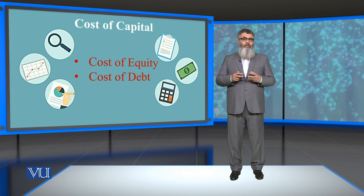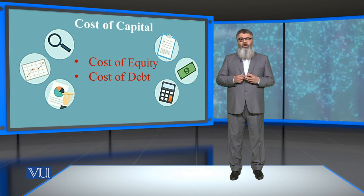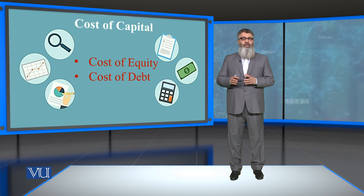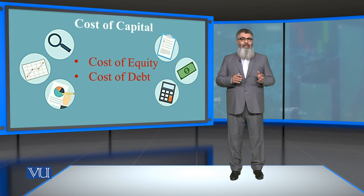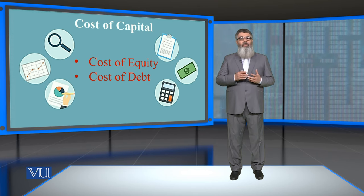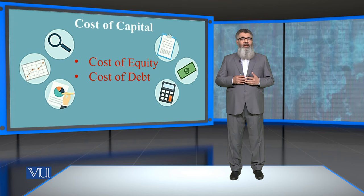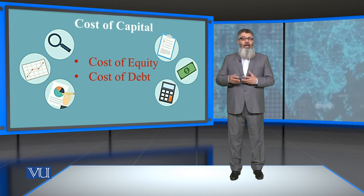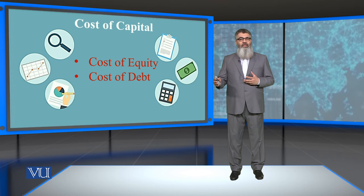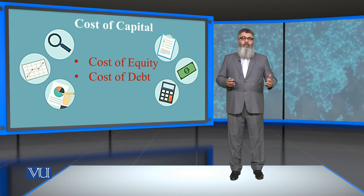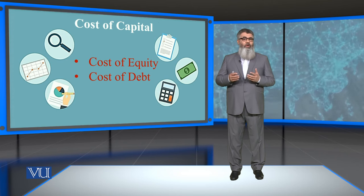So we conclude our basic initial discussion on cost of capital by saying that capital — which is mainly external capital — comprises of equity and debt. The cost of equity and the cost of debt are to be separately calculated, and mainly these costs are calculated by considering their market values or market prices. On one side for the investors this is their required rate of return, and on the other side for the company it is their cost of capital.